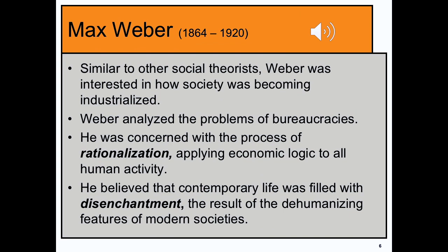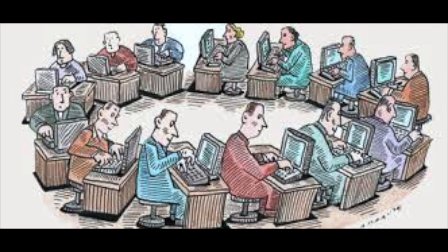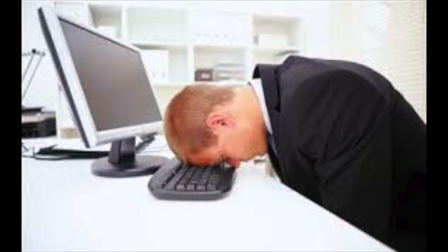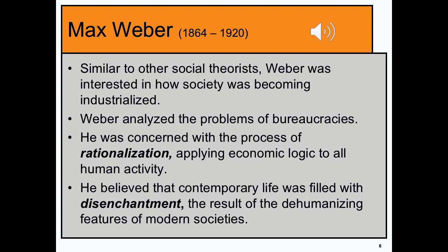Next we have Max Weber, who was writing in the late 1800s and early 1900s. Similar to the other social theorists, Weber was interested in how society was becoming more industrialized. He's different from Marx and Durkheim because he focused on how society was becoming more rationalized through bureaucracies. If you think of Marx, think of factories; if you think of Weber, think of offices. He talks about how bureaucracies are so impersonal that people are depersonalized — they become faceless. He believed contemporary life was filled with disenchantment, and that bureaucracies and this rationalization process ended up dehumanizing people. He was very pessimistic about modern society.